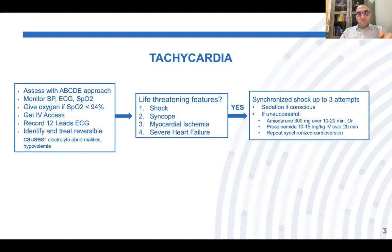If three attempts are unsuccessful, consider giving amiodarone 300 mg over 10 to 20 minutes, or procainamide 10 to 15 mg/kg over 20 minutes. After finishing antiarrhythmic medication, you can consider repeating synchronized cardioversion. Don't forget to seek expert help at this stage.